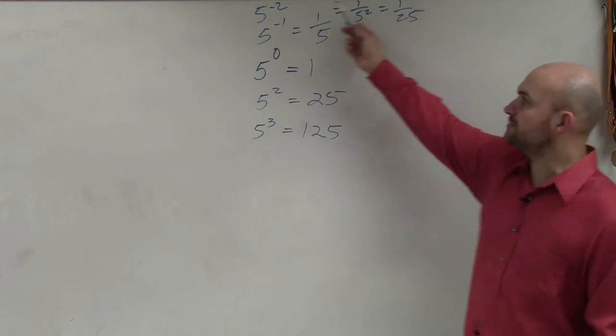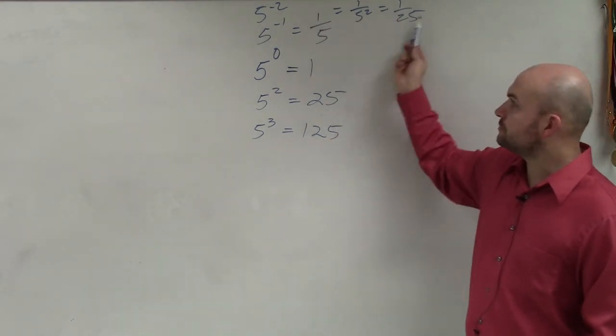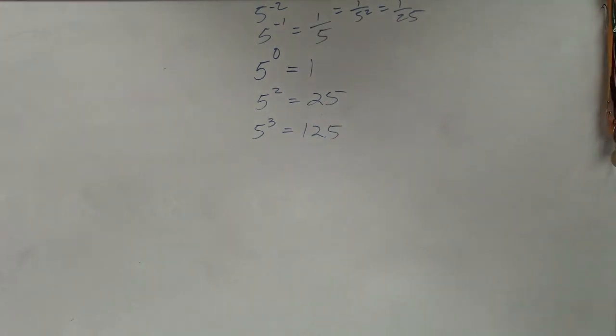So if you're looking from negative numbers into the positive, 5 to the 0 power is just going to simply equal 1. And that's going to be true for all x.